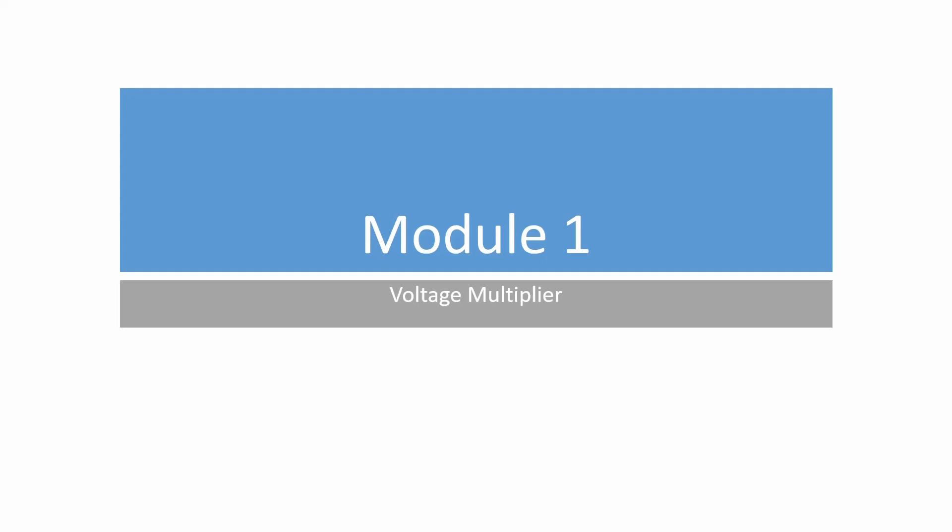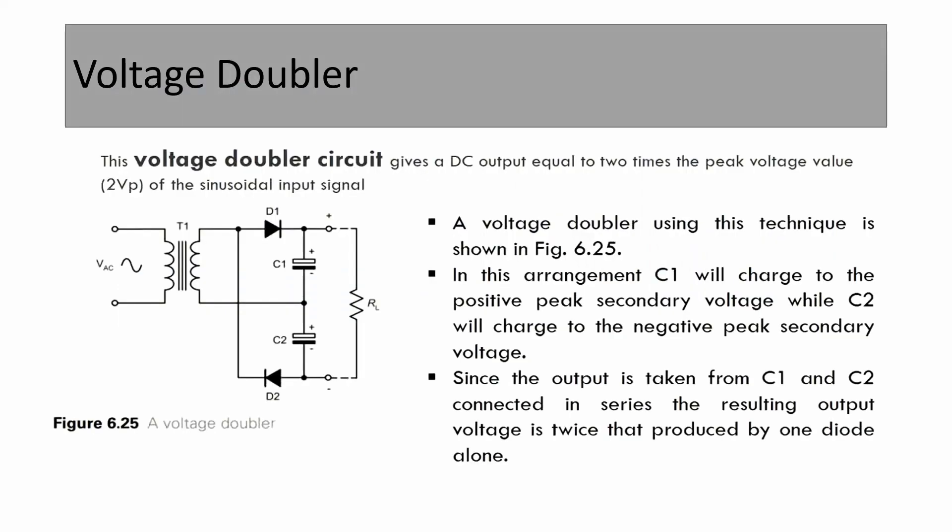Now we discuss the voltage multiplier, specifically the voltage doubler and voltage tripler. In these circuits, the output voltage is twice or three times the voltage across the secondary winding. So if we consider the secondary winding voltage as maximum voltage Vm, then the output voltage V0 is equal to 2×Vm or 3×Vm. The voltage doubler circuit gives a DC output equal to twice the maximum voltage across the secondary winding, 2Vp or 2×Vm.